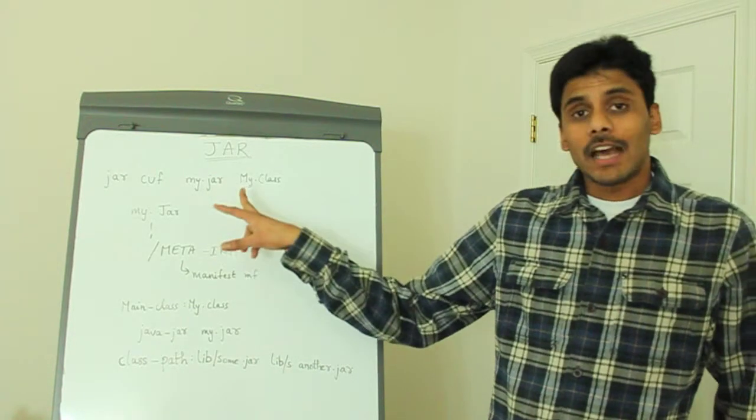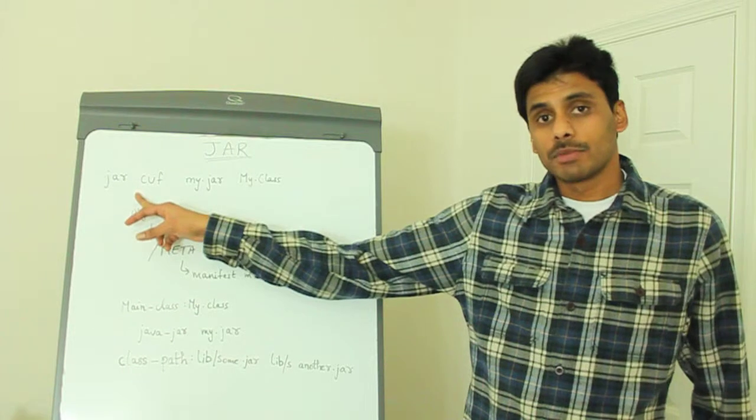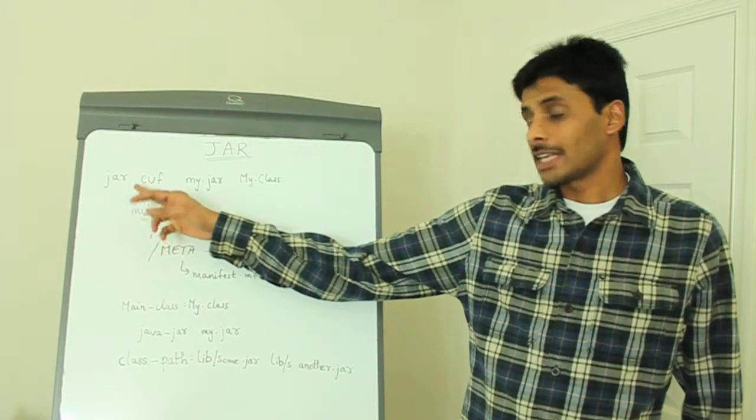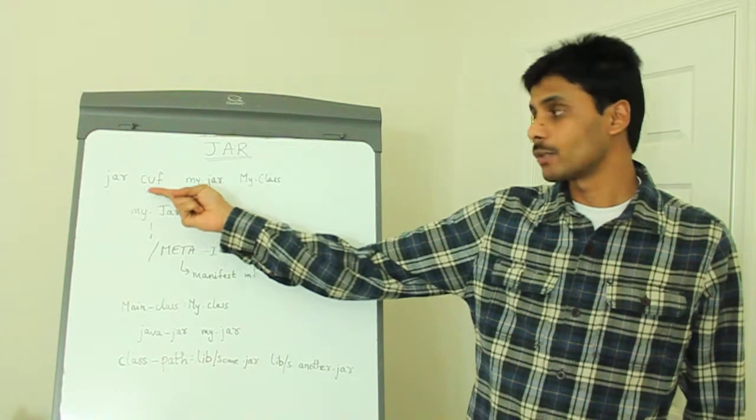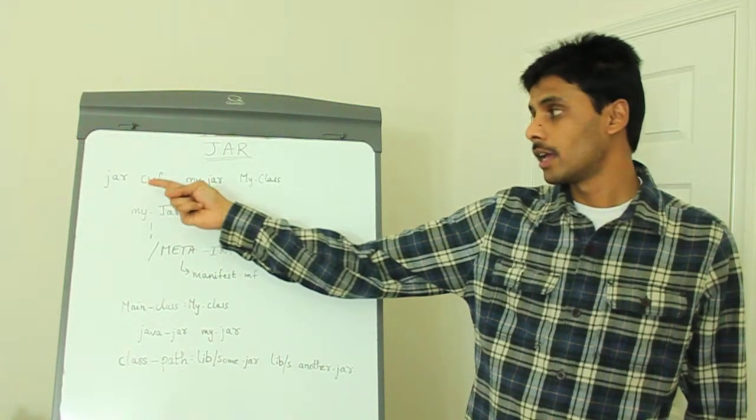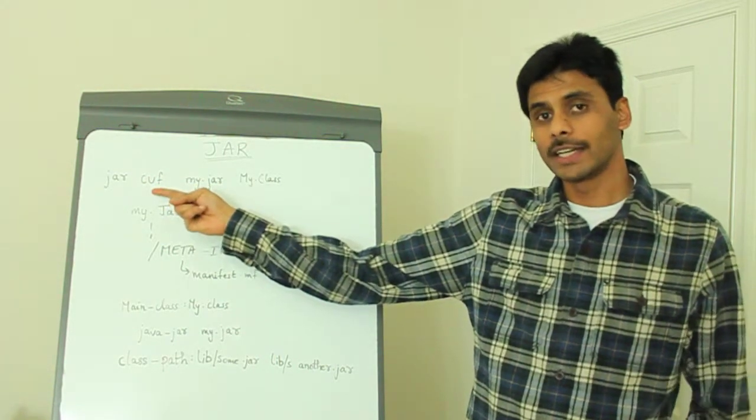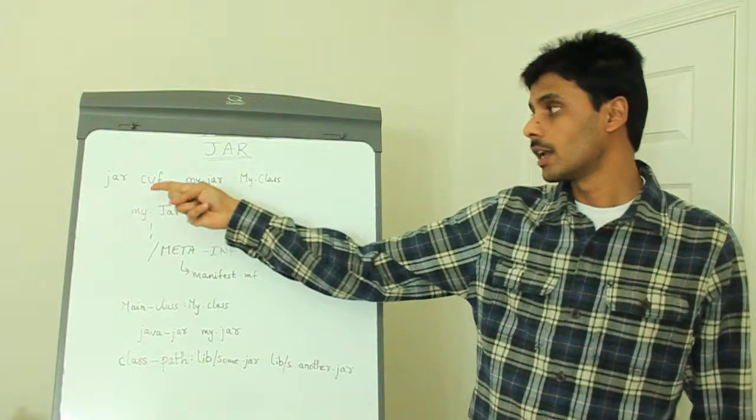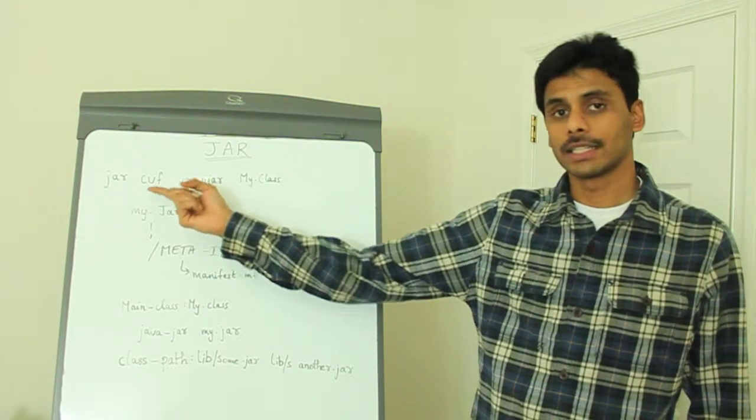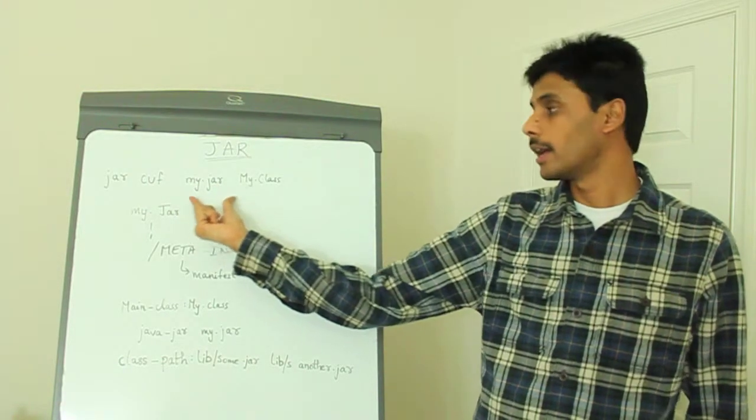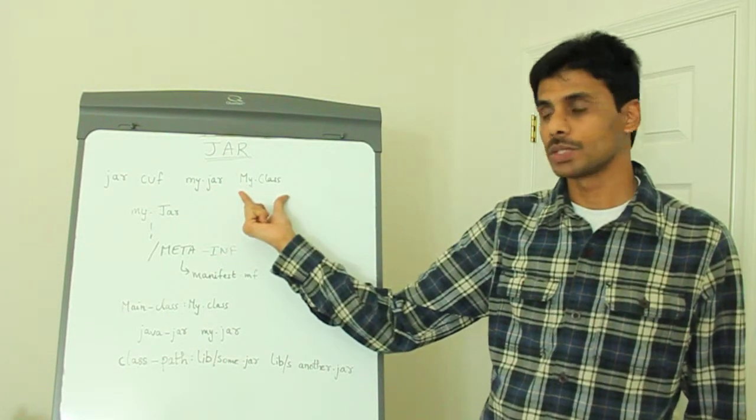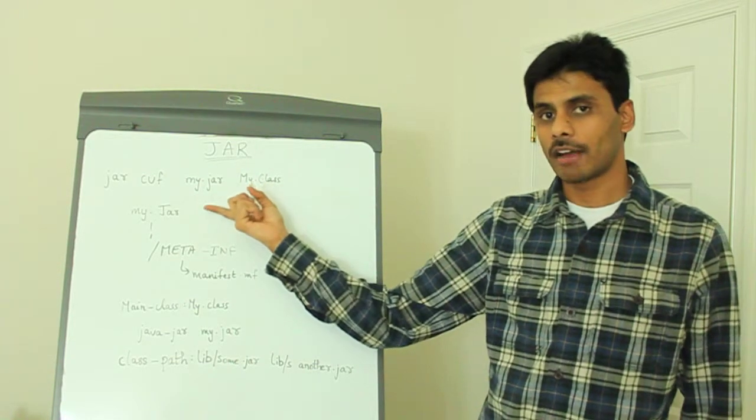We can create a JAR file using the JAR command that comes with JDK. It has multiple options. The options I have here are CVF which stands for create a JAR file in verbose mode, giving us all the details of what's happening behind the scenes. And then F for file tells the JAR command where the output should go. In this case, my.jar and the list of classes which has to go into this JAR file.